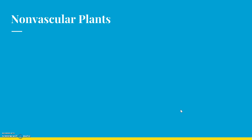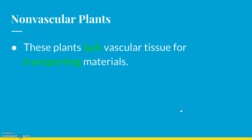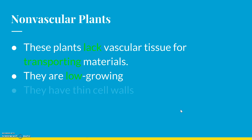We briefly talked about what vascular meant, so we're going to talk about that more today. These plants lack vascular tissue — they do not have vascular tissue in order to transport materials. Remember in the last PowerPoint, we talked about how roots need to move water up into the stems and leaves, and then sugar from the leaves needs to move down into the roots. So this vascular tissue is important, but some plants don't have it. These plants need to be very low growing — they cannot be tall. If they were tall, they wouldn't be able to move that stuff around because they don't have the tubes. So they stay nice and low to the ground.